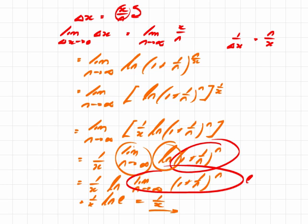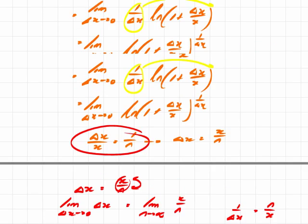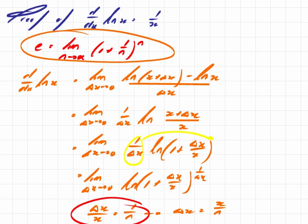A very counterintuitive, difficult, and slightly uneasy proof of the fact that the first derivative of the natural log of x equals 1 over x.